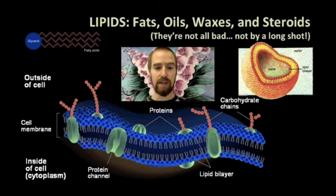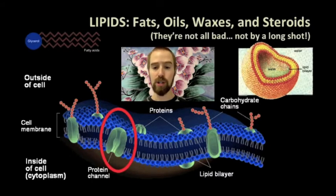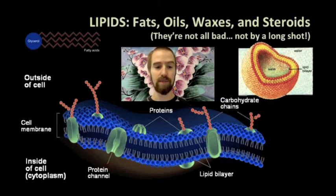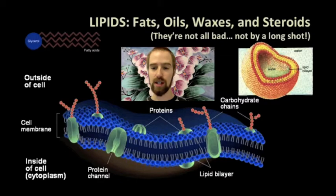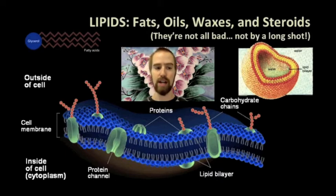We can also see a few other important molecules embedded in the cell membrane, including proteins, which will be the focus of our next video, and carbohydrates, which we talked about previously. These molecules help the cell to communicate with other cells and regulate the movement of materials entering and exiting the cell. So our cell membranes are not made up entirely of lipids, but lipids are the main structural component, the molecules that hold our cells together.